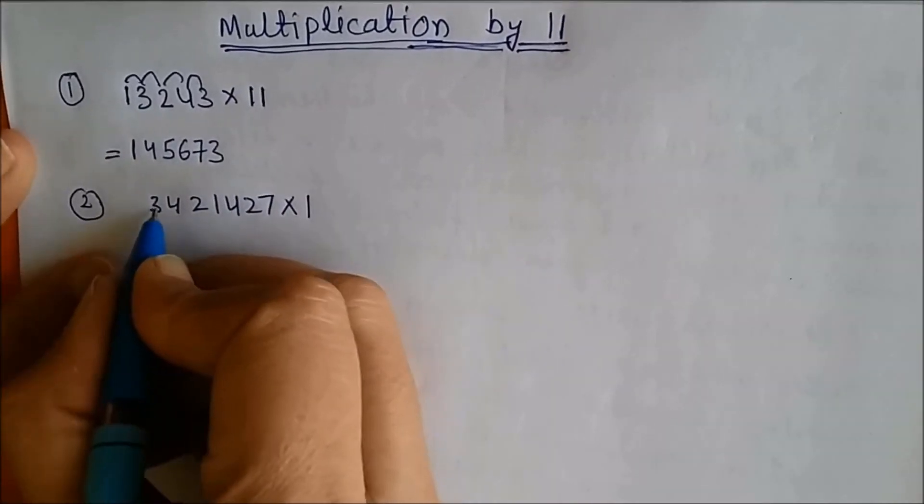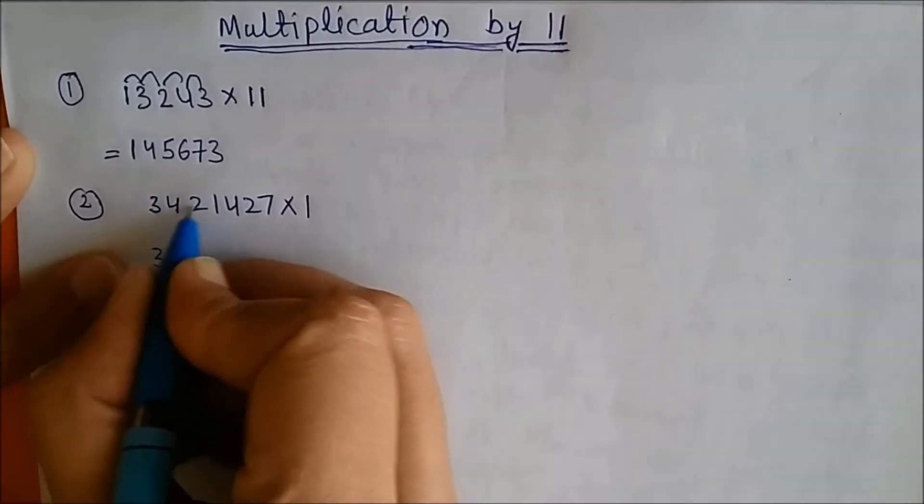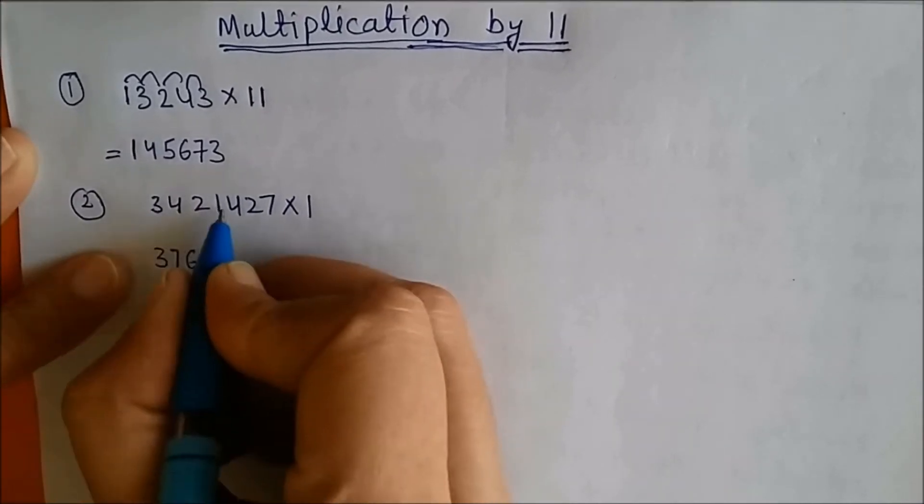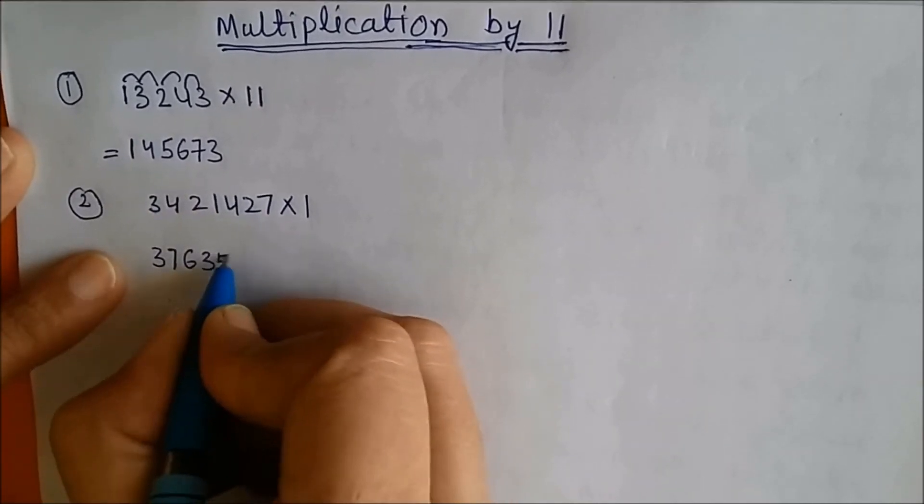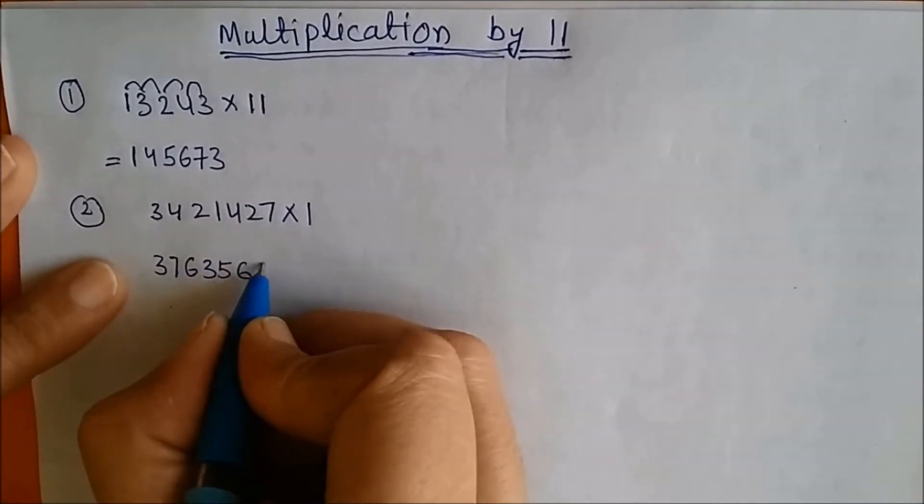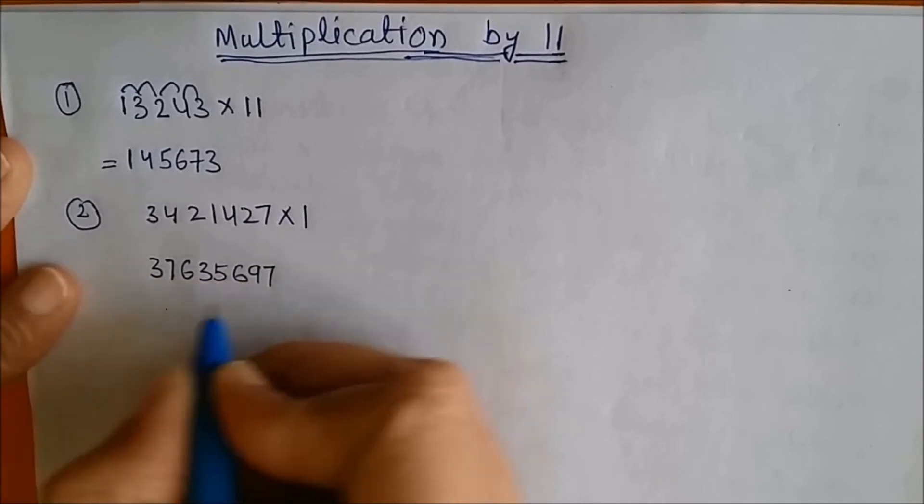Sum of these two: 7, sum of these two: 6, sum of these two: 3, sum of these two: 5, sum of these two: 6, sum of these two: 9, and last number as it is. So this is my answer.